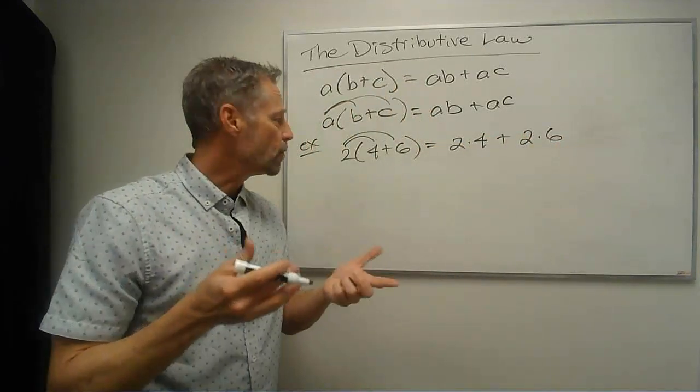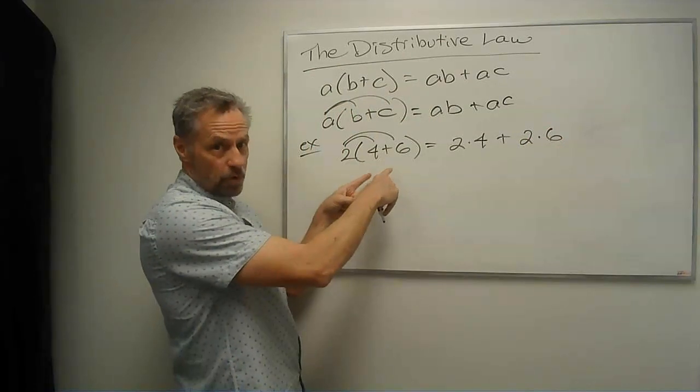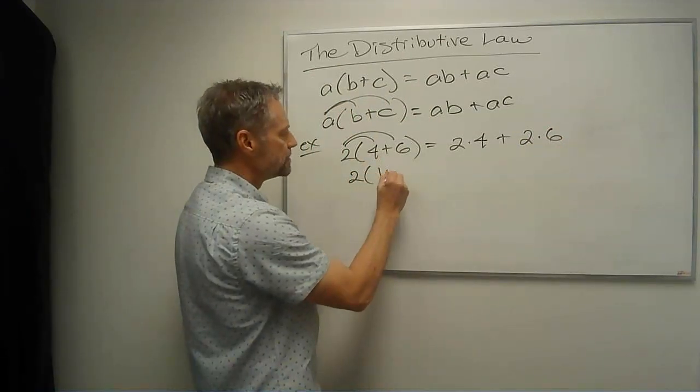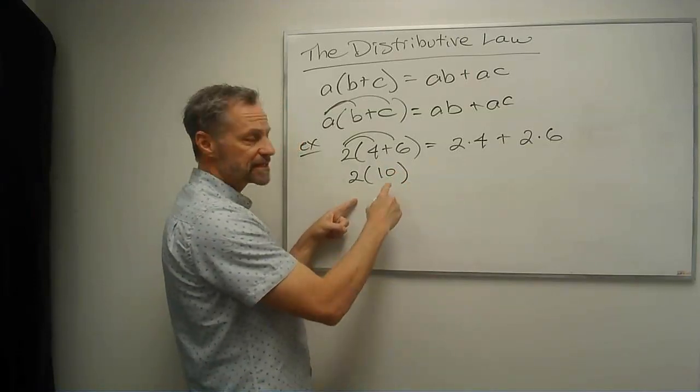And we can check to make sure that works because order of operations here, we say inside in parentheses, 4 plus 6 is 10, and then 2 times 10 is 20.